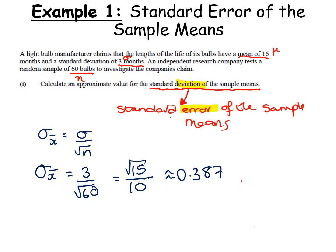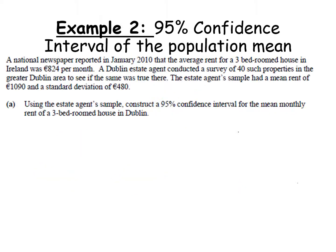If you ever see the phrase 'standard deviation of the sample means' and think it's the same as the standard deviation — it isn't. The standard deviation of the sample means is the standard error of the sample means, which is something very different.